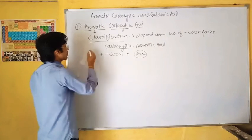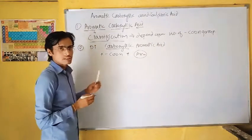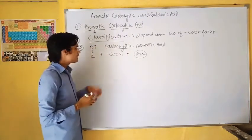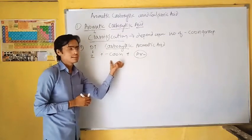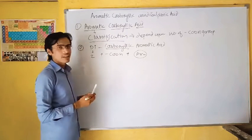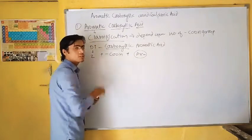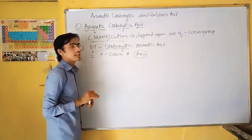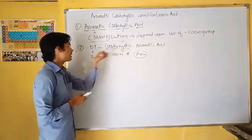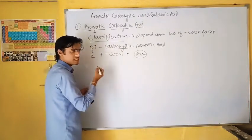Second category: Di-Carboxylic Aromatic Acid. Di stands for 2. The definition: when an aromatic acid contains 2 -COOH groups as functional groups directly linked with an aromatic ring, that category of aromatic carboxylic acid is said to be Di-Carboxylic Aromatic Acid. Let's begin with an example.